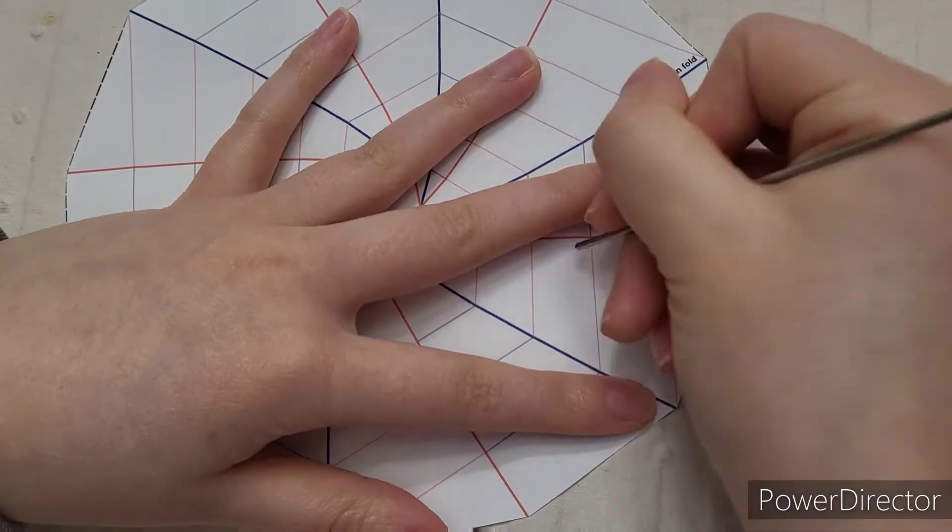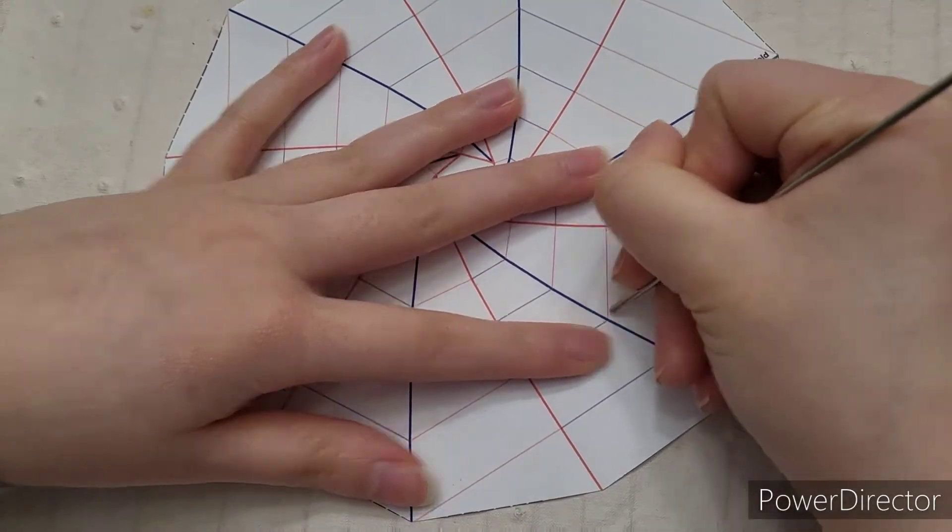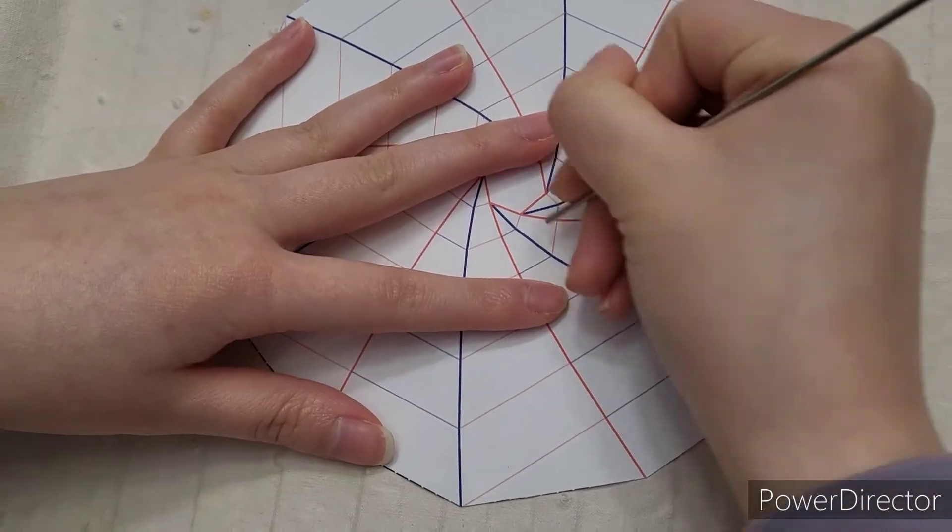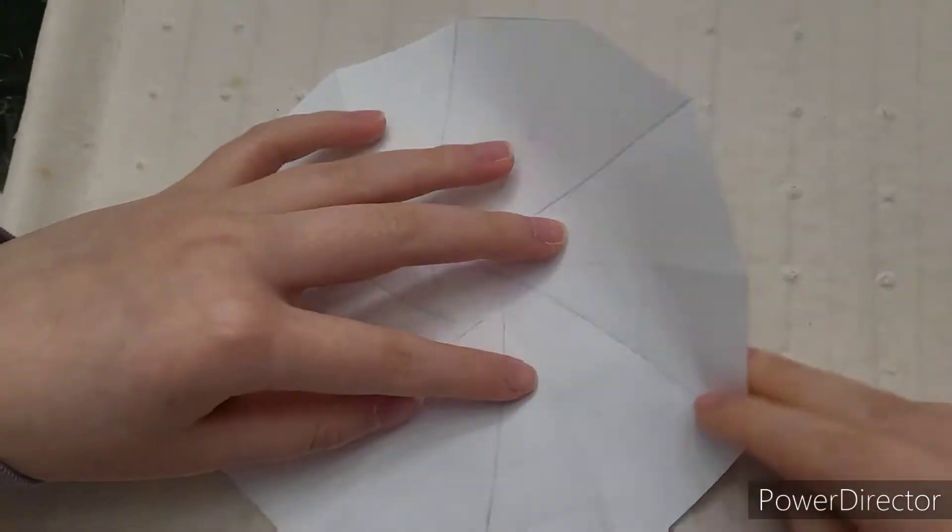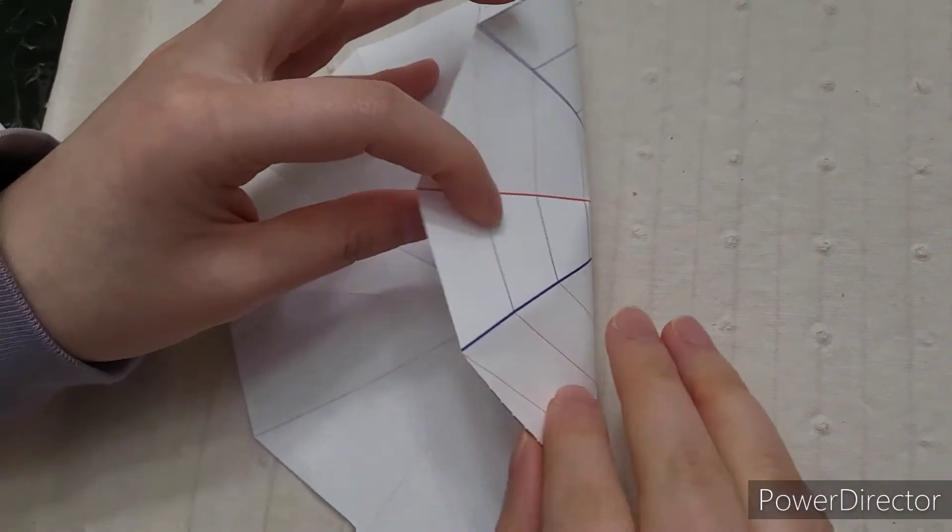Now, you could also create these short lines between the larger ones if you like, but this part is optional. If you do score these lines, make sure to do the blue ones on the back side as well.